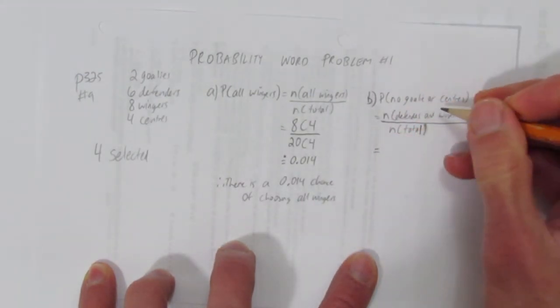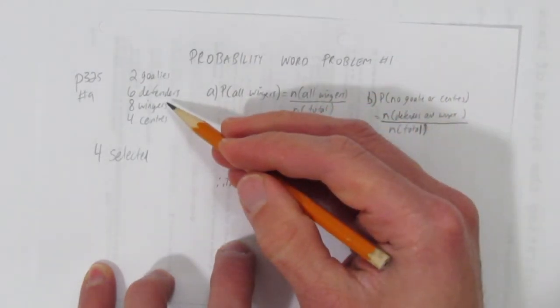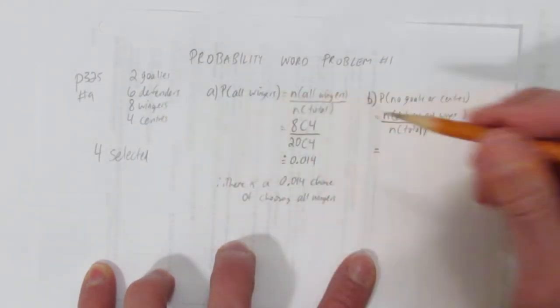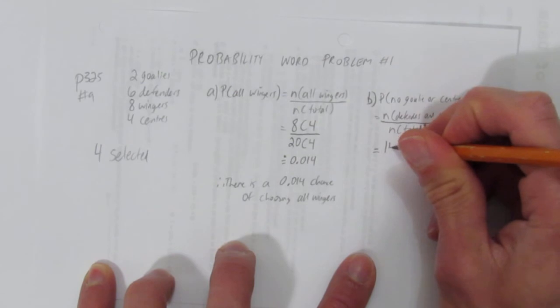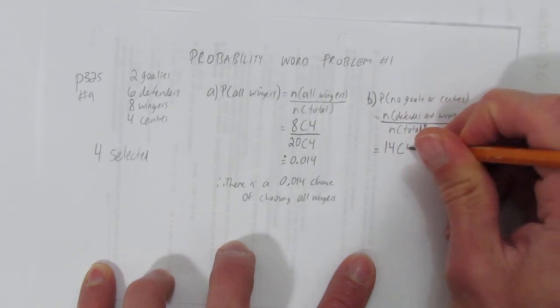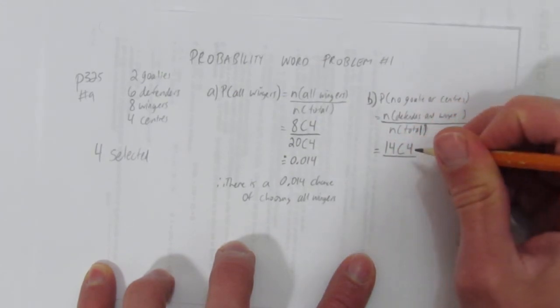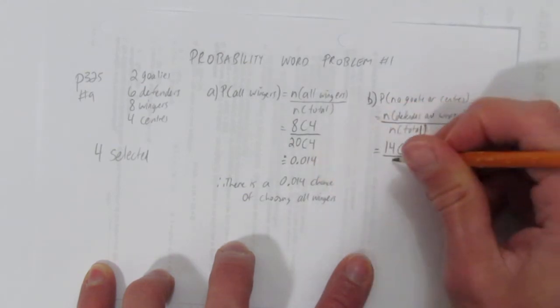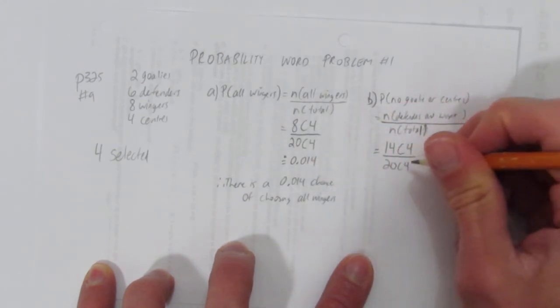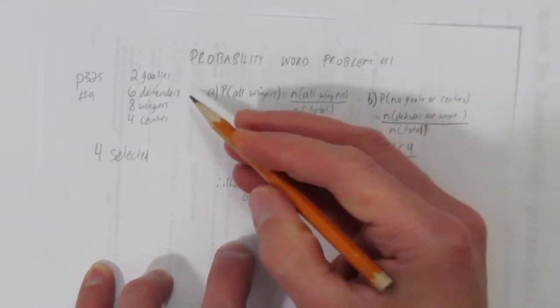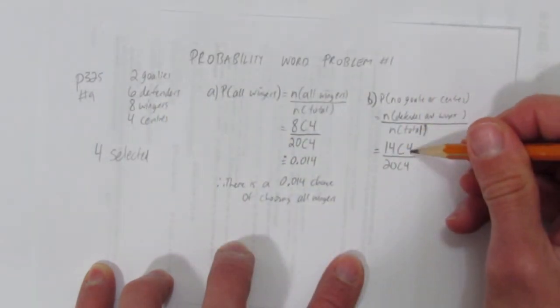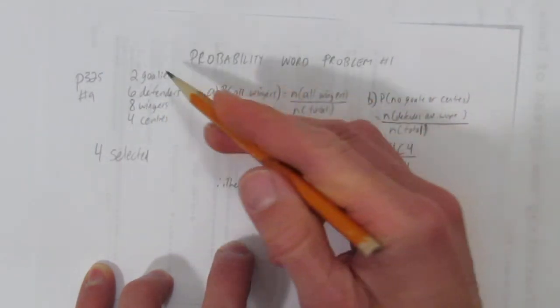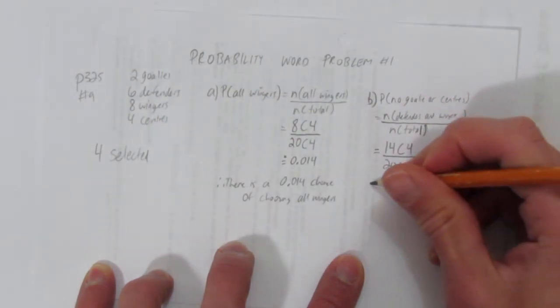So, how many ways can we choose among just defenders and wingers? Well, there are six defenders, eight wingers, so that would be choose from 14 of them, choose four, over choosing from 20, choose four. That is, we have to choose from 14 positions, four people, out of the total choices we could have chose before 20, choose four.